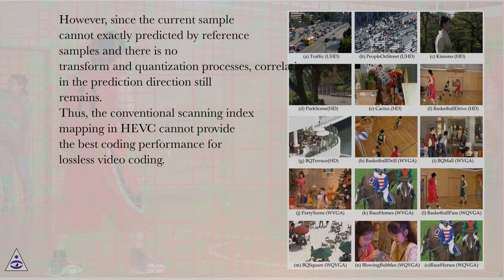However, since the current sample cannot be exactly predicted by reference samples and there is no transform and quantization processes, correlation in the prediction direction still remains. Thus, the conventional scanning index mapping in HEVC cannot provide the best coding performance for lossless video coding.